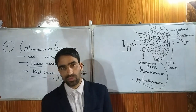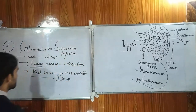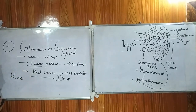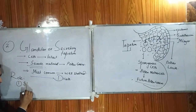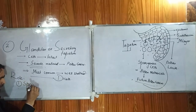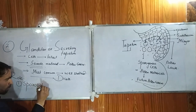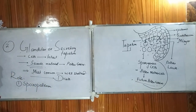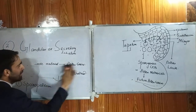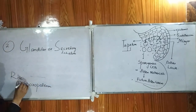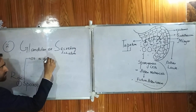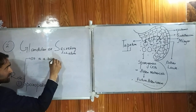Let us discuss the role played by the glandular type of tapetum. The first material secreted from the glandular type of tapetum is called sporopollenin — we call this as superpolynin. What is sporopollenin? It is a biopolymer.